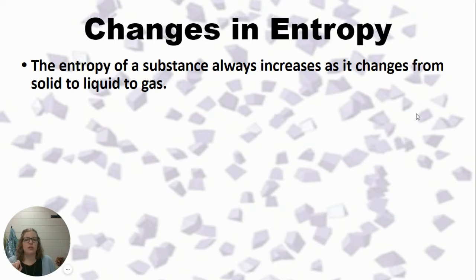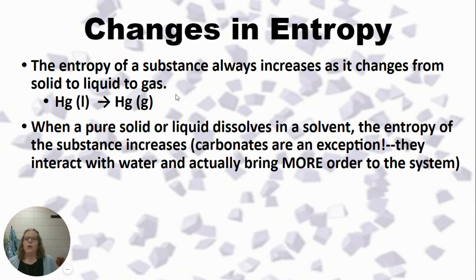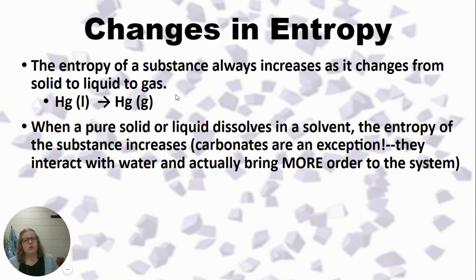Entropy of a substance always increases as it changes from a liquid to a gas. For example, going from mercury liquid to mercury vapor gives a positive delta S. When a pure solid or liquid dissolves in a solvent, entropy also increases — think about a solid with its organized lattice being broken apart and dispersed into solution. That's a positive entropy change.